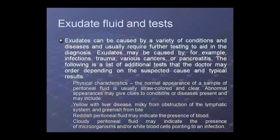Exudate may be caused by infection, trauma, cancer, or pancreatic inflammation. For physical characteristics, normal peritoneal fluid appears straw-colored and clear. Abnormal appearances include yellow (liver disease), milky (lymphatic system involvement), green (bile present), reddish (blood presence), or cloudy fluid (indicating microorganisms or elevated WBC suggesting infection).